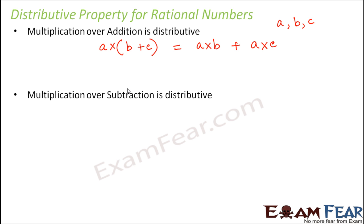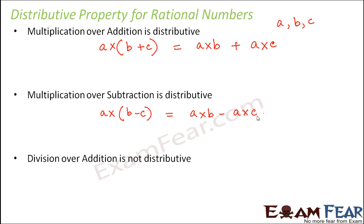Similarly, the distributive property of multiplication over subtraction also holds true — that is, a into (b minus c) can be written as a into b minus a into c. However, division does not distribute over addition or subtraction: a divided by (b plus c) is not equal to a divided by b plus a divided by c.